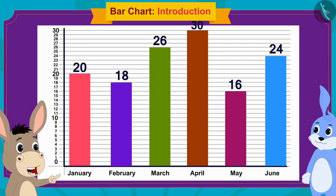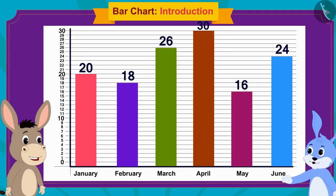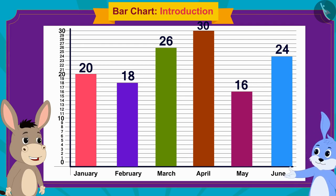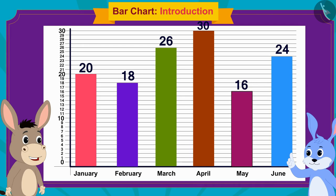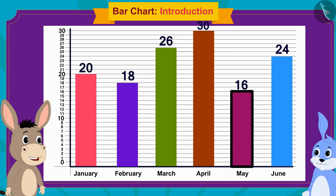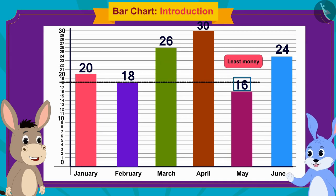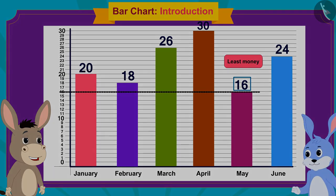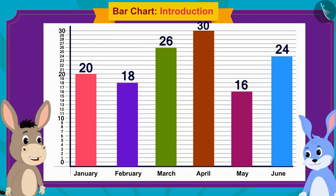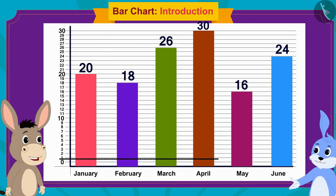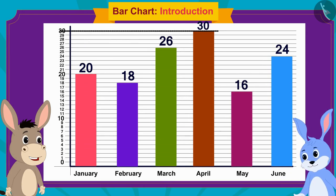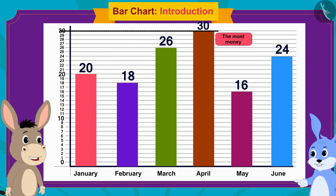'Now can you tell me in which month you saved the least amount of money?' asked Bholla. Bunny replied, 'Absolutely, now it has become very easy! The month of May has the smallest rectangle, which means I saved the least money — 16 rupees in May. And the month of April has the longest rectangle, which means I saved the most money — 30 rupees in April!'